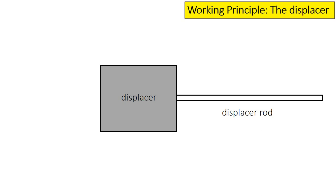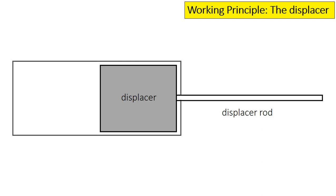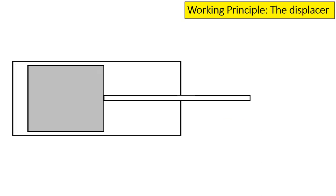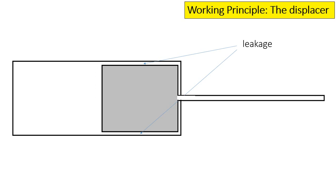The displacer looks like a piston but it is not the piston, as will be clear in a while. The displacer works within a chamber — the displacer chamber — and goes back and forth, capable of displacing volumes of gas. Compared with the chamber, there is a leakage. This is the reason why it is not the piston: the connection between the cylinder and the displacer is not a tight connection.